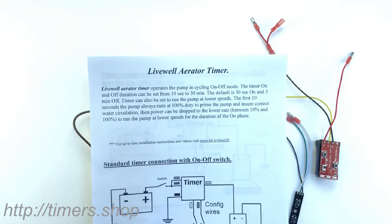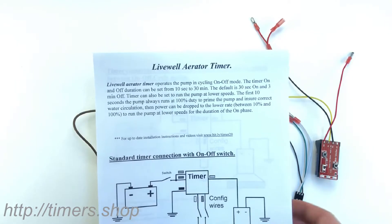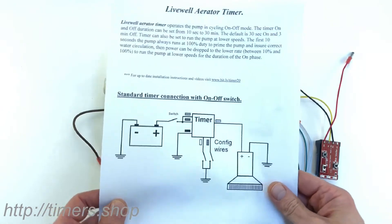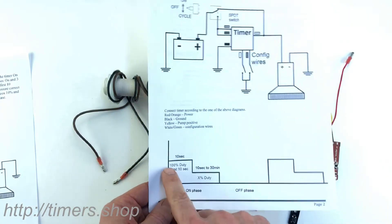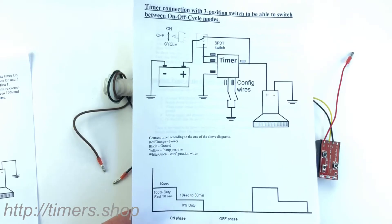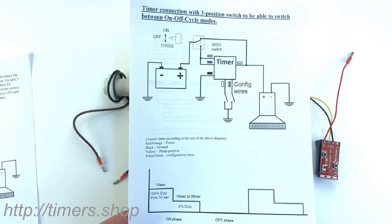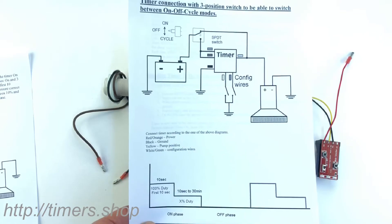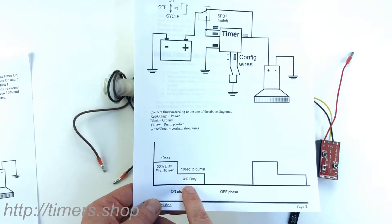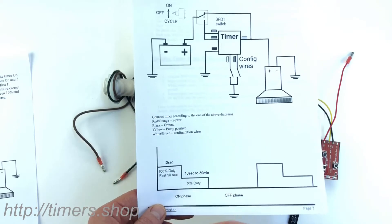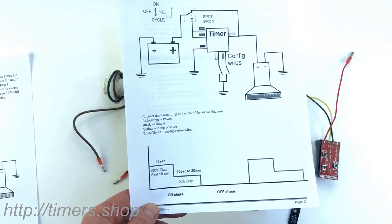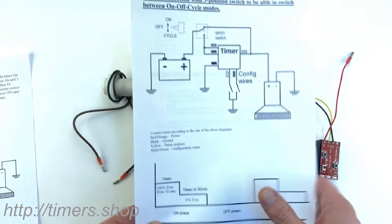Another excellent feature of this timer is the ability to change the duty cycle to the pump. When the pump runs, the first 10 seconds it always runs at 100% duty cycle, so it primes the pump and makes sure the water circulates correctly. Then, if you want, you can drop the duty cycle to a lower percent and allow the pump to run at a slower speed, consume less power, and not move the water that fast.